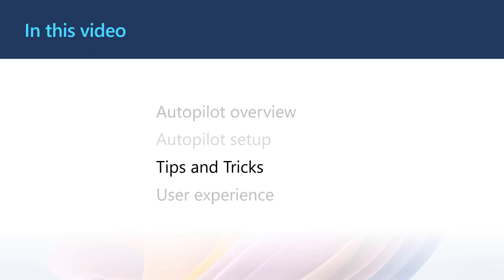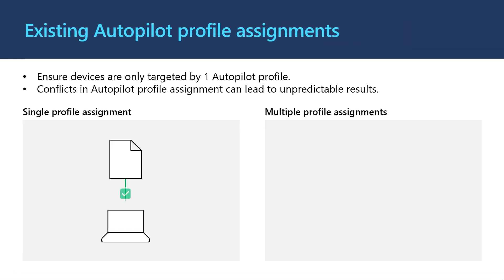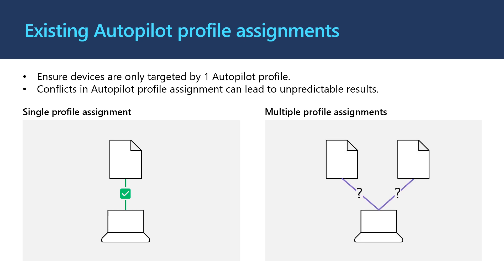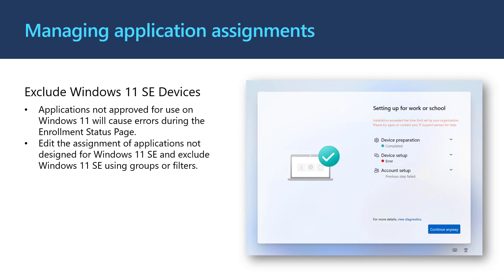Before we see the user experience, I want to highlight some tips and tricks for Windows 11 SE that might save you some time. It's important when you set up Autopilot that each device receives only one Autopilot deployment profile. Devices with more than one Autopilot profile assigned will result in either policy applying, so ensure that groups you target with Autopilot devices contain unique members. For example, if you have an Autopilot group that targets all imported Autopilot devices, then you can continue to use that profile for Windows 11 SE devices as well. The next tip is regarding application assignments — remember that we can only run curated apps on Windows 11 SE. In your Intune environment, you may already have apps targeted at groups that could contain Windows 11 SE devices or users. You can modify the assignment of these applications to exclude Windows 11 SE devices.